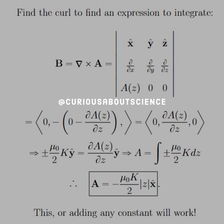We evaluate the curl — it's a nasty cross product with the determinant. We simplify it down, all the other components go to zero, and we're just left with something in the y-hat direction, which is indeed what we should have based on the geometry.